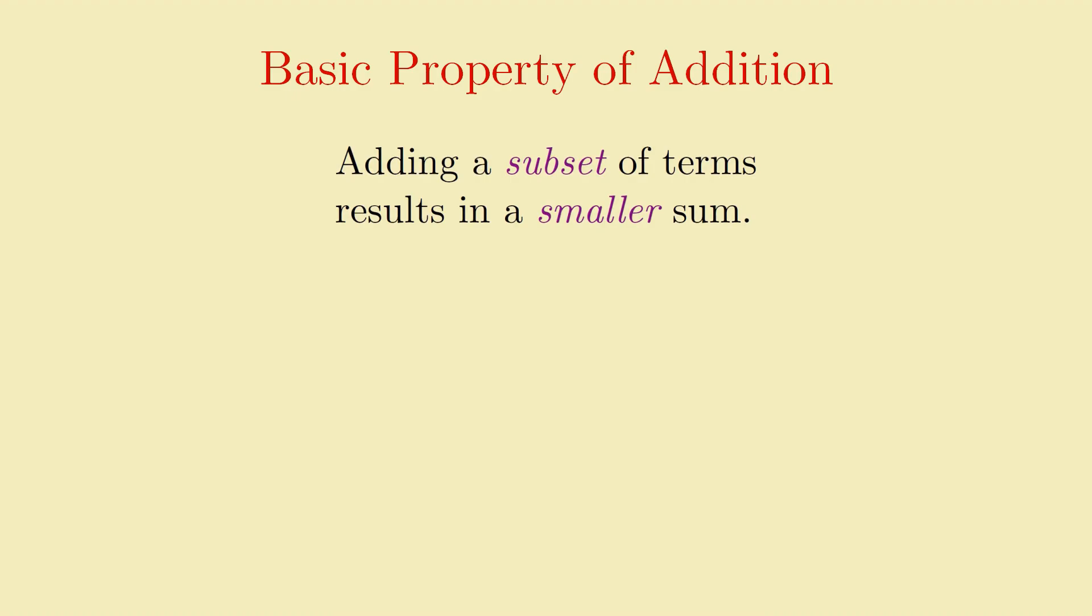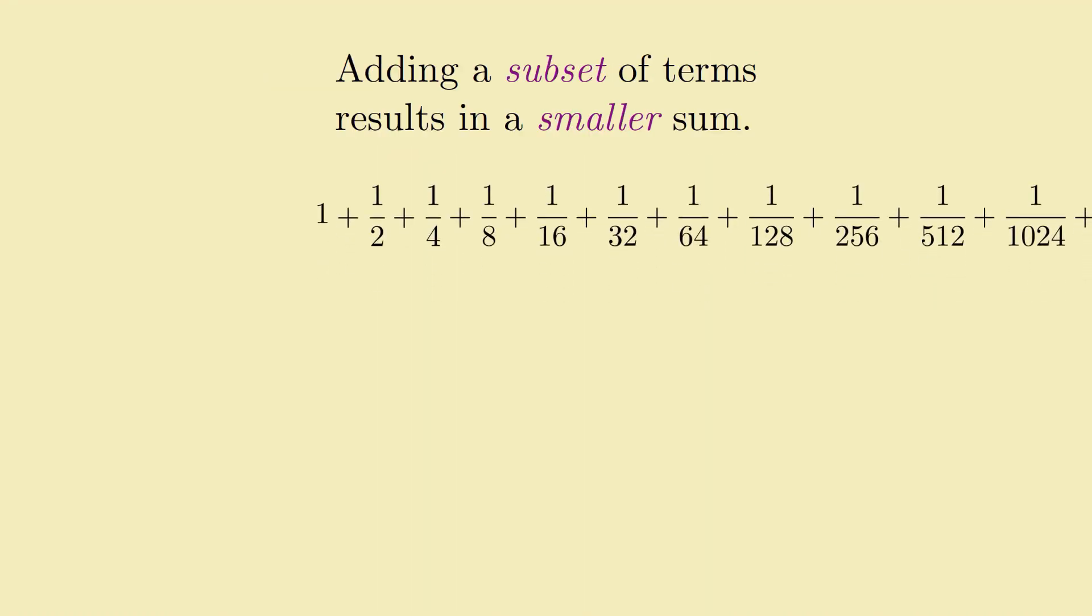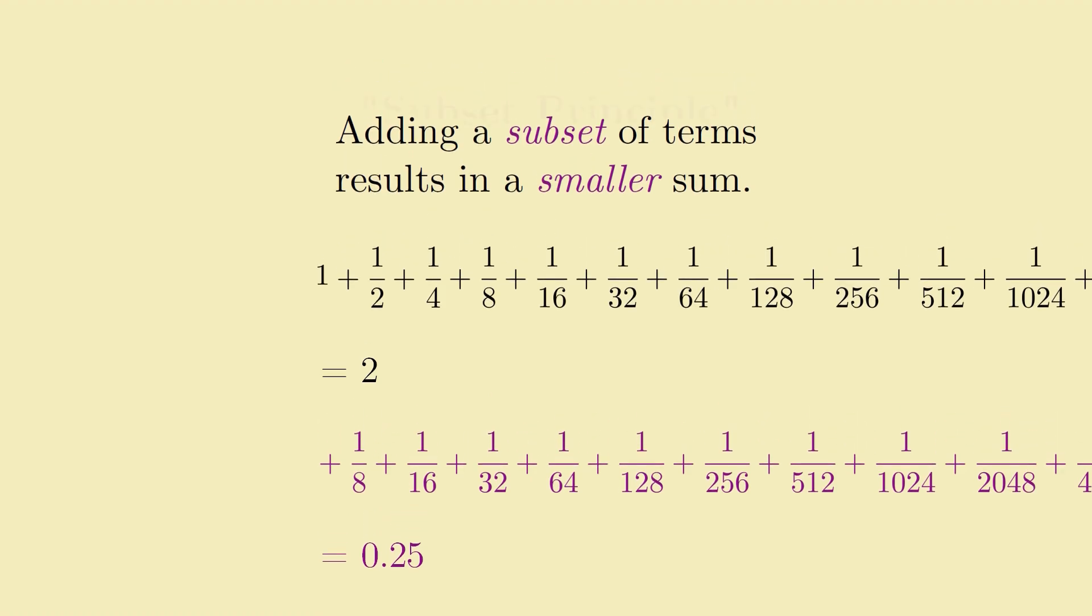Adding a subset of terms results in a smaller sum. Makes sense, right? If I'm looking at adding up the numbers 1 through 10, and I instead throw away some of the terms and look only at the sum from, say, 1 through 5, I'll end up with a smaller total. This property carries over to countably infinite sums too. If I throw away terms from an infinite series of positive terms, the resulting sum, if it was finite, becomes smaller. So it seems pretty reasonable to require uncountable sums, however they work, to obey the same principle.